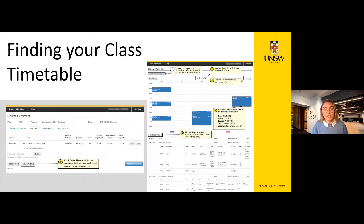Once you have enrolled and class registered, you can view your class timetable showing times and locations for each class this term. Go to myUNSW, then Update Enrolment, Course Enrolment, and then View Timetable. You can download your timetable as a file and import it into your favourite calendar apps. Your timetable shows individual weeks of the term, and your schedule may change each week, so it's important to check it regularly.